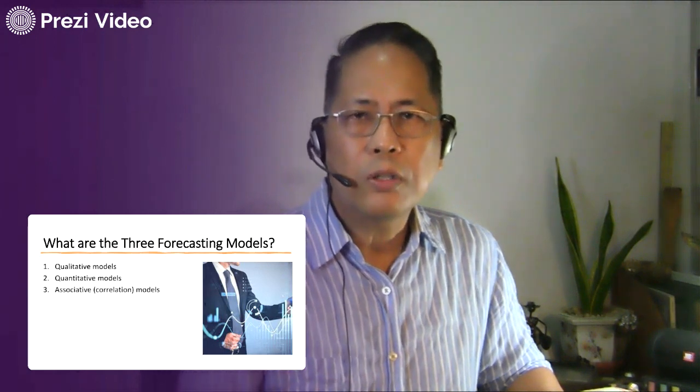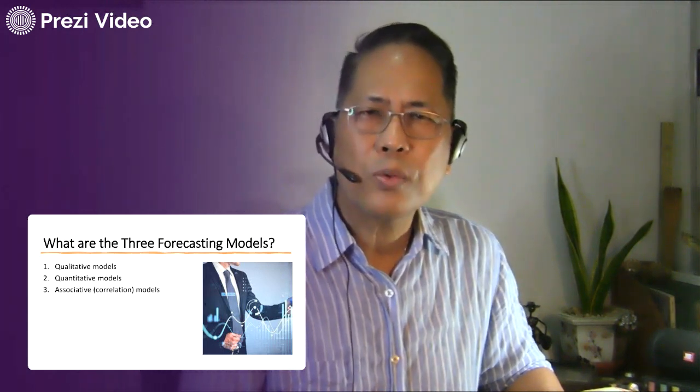The third and final forecasting type utilizes associated correlation models, focusing on long-range forecasts that use qualitative and quantitative macro measurements such as political, demographical, new technology, and other events to predict the future. Associated forecasts are employed to predict the impact that a disruptive technology, product, or process discovery would have on the marketplace.